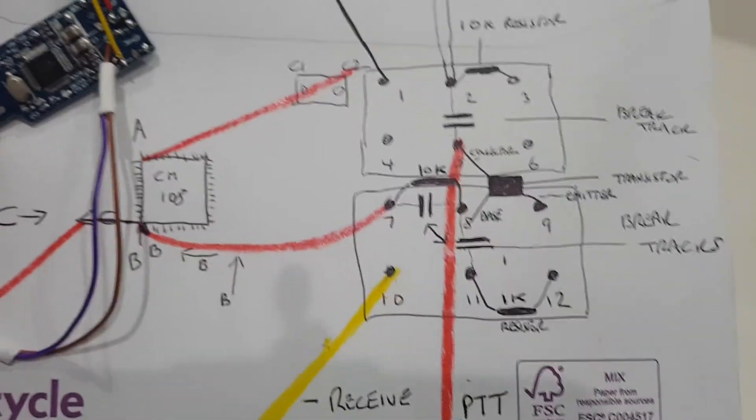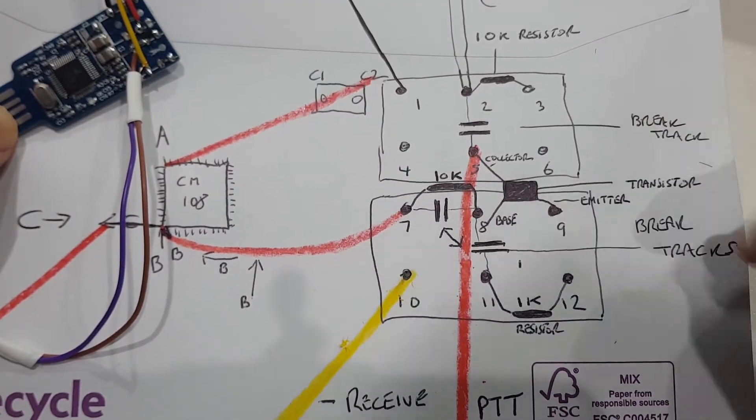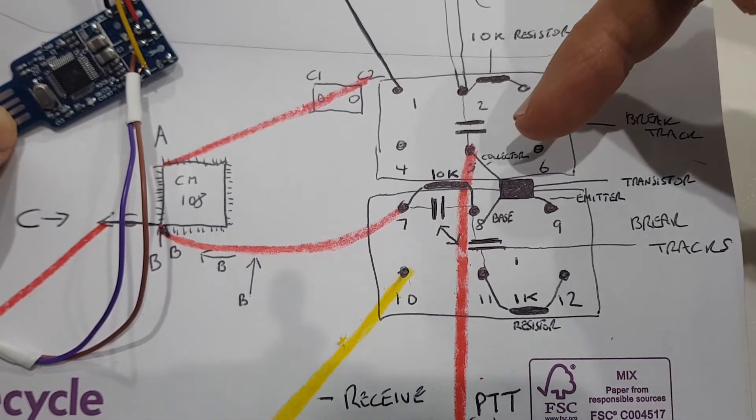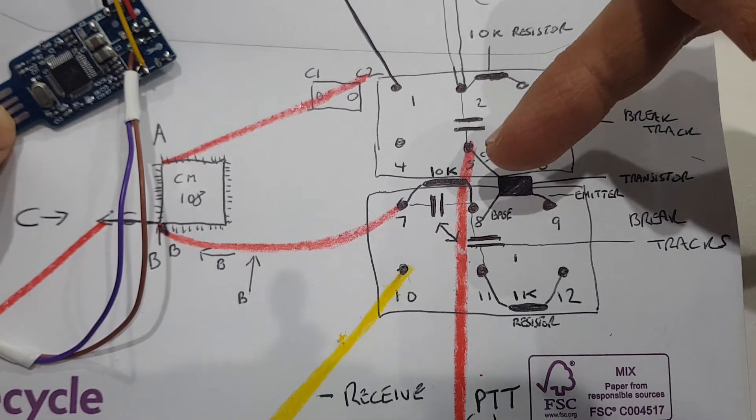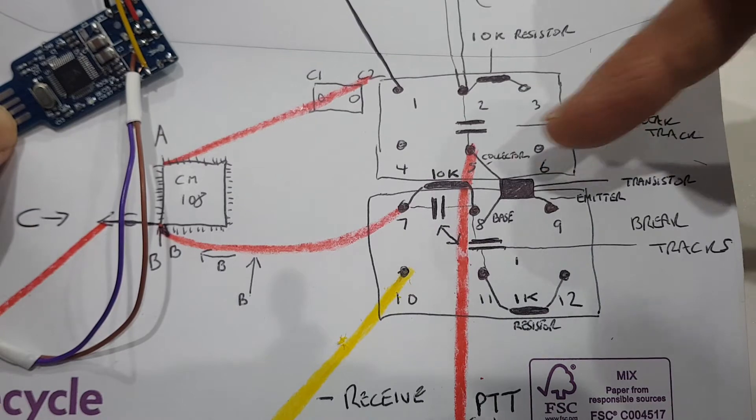Then, if you look here, we've also got the transistor here. The transistor is just here and it's connecting, the collector is connecting to number five, the base to number eight and the emitter to number nine.